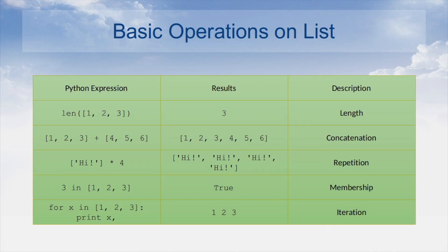Lists respond to the plus and asterisk operators much like strings — they mean concatenation and repetition respectively, except the result is a new list. The len function takes a list as argument and returns the number of elements — for example, len([1, 2, 3]) returns 3. Using the plus operator, [1, 2, 3] + [4, 5, 6] concatenates the two lists and gives [1, 2, 3, 4, 5, 6].